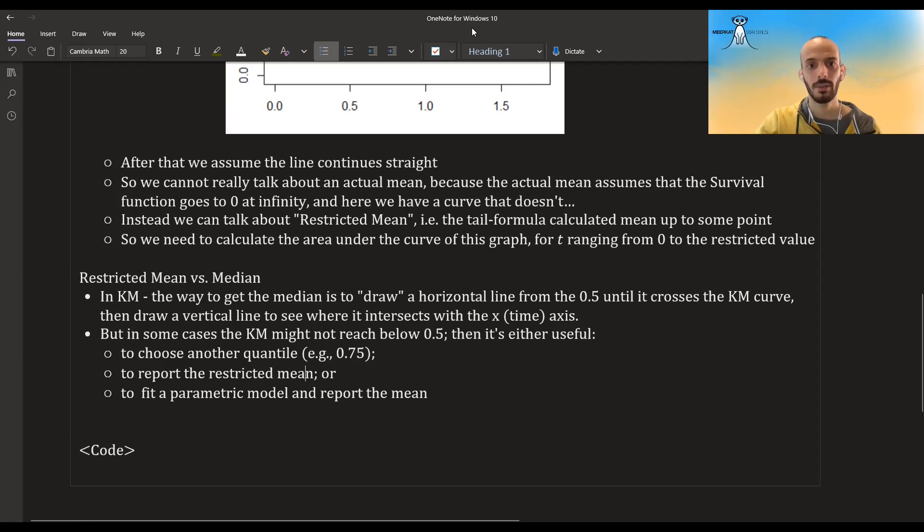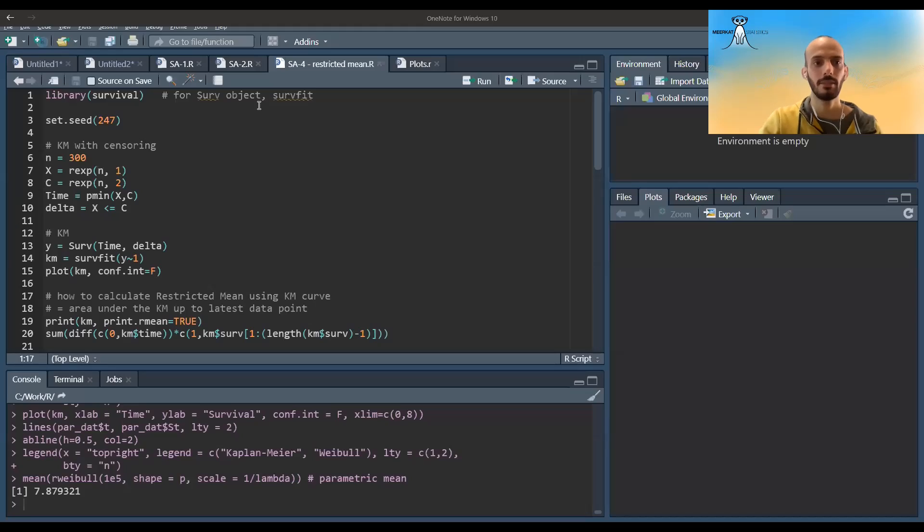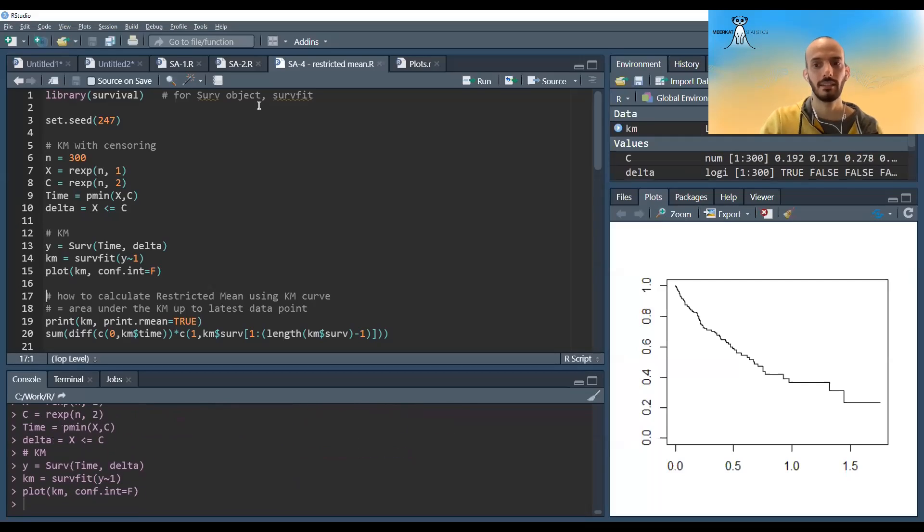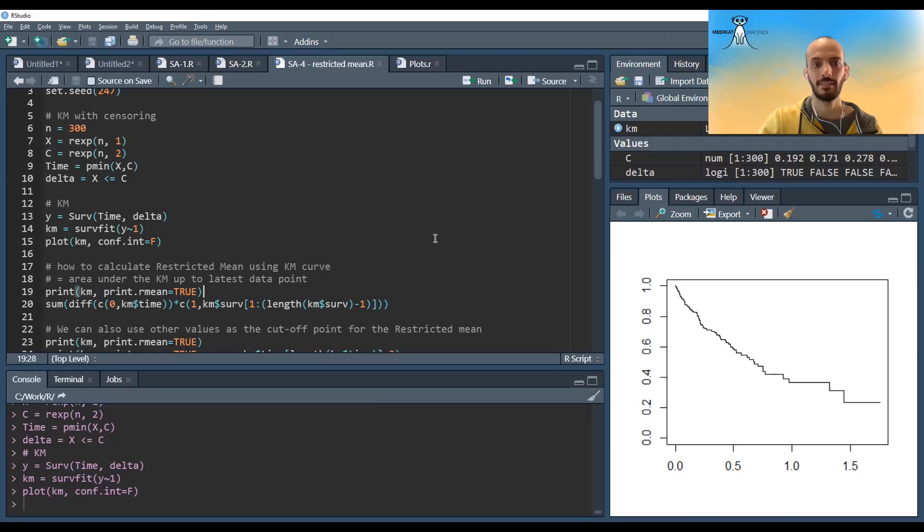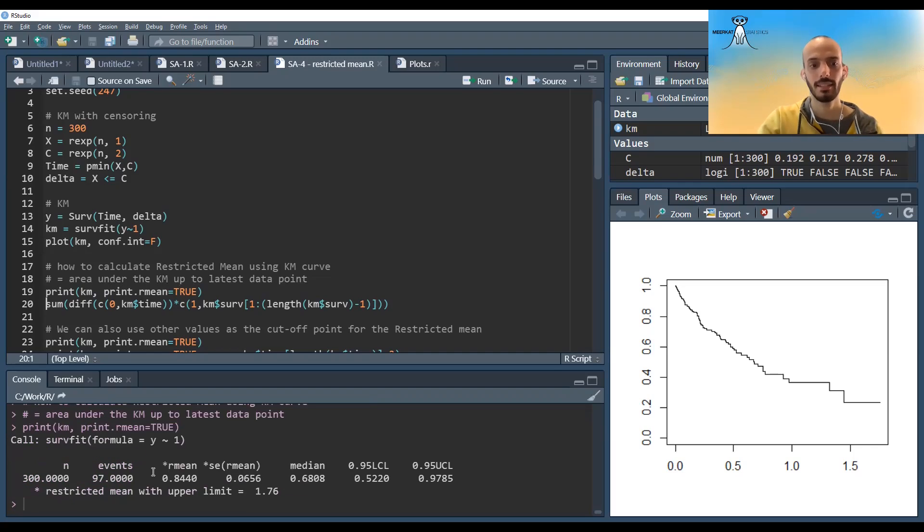So let me switch into R and show you a little bit of code. Here I'm generating this Kaplan-Meier curve, and if I choose to print this Kaplan-Meier and I set that I also want to print the restricted mean, you can see it will print this restricted mean over here. And what it is, it's just the area under the curve until the last point.